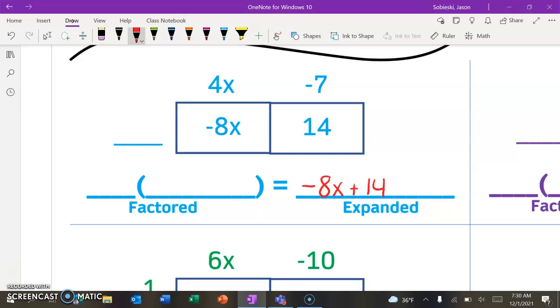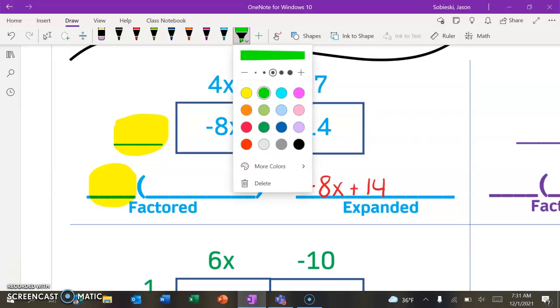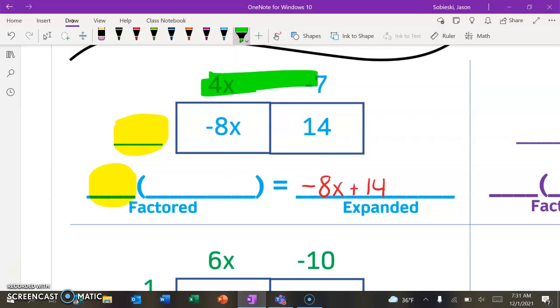We are just trying to figure out what the factored form has to be. Again, we said the thing that comes out front is the first part of our factored form, and then what comes on top, so in this case, 4x minus 7, that is going to be what goes in our parentheses. So all we have to do is fill this in.